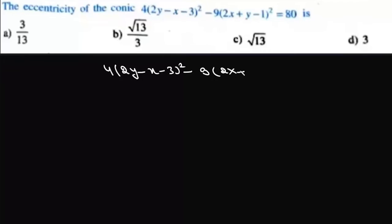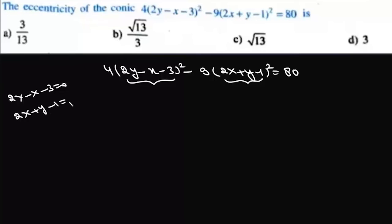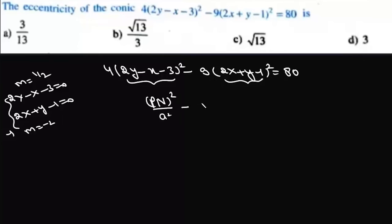Example 2: Find the eccentricity of the conic 4(2y - x - 3)² - 9(2x + y - 1)² = 80. Looking at the two lines: 2y - x - 3 = 0 has slope 1/2, and 2x + y - 1 = 0 has slope -2, so m₁ · m₂ = -1 — they are perpendicular. This is a hyperbola, and we need to write it in the form Pn²/a² - Pm²/b² = 1 to find a and b, and hence the eccentricity e.